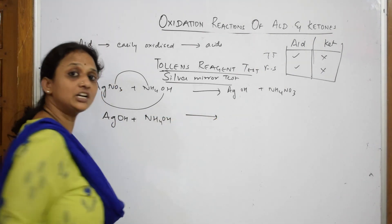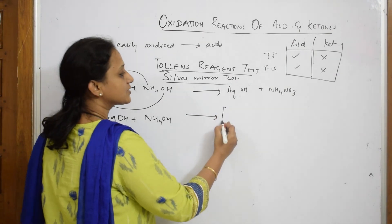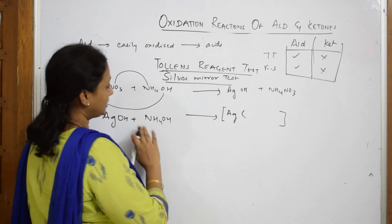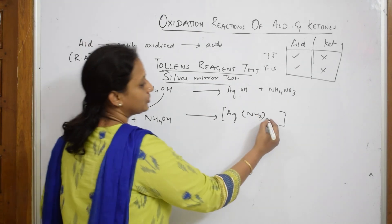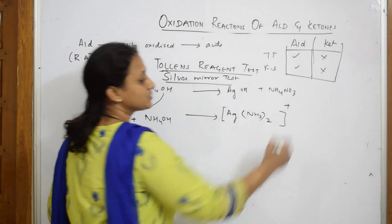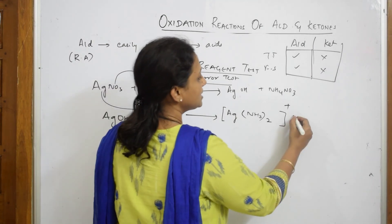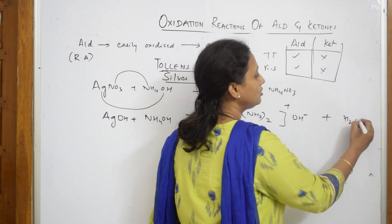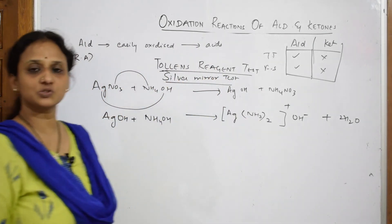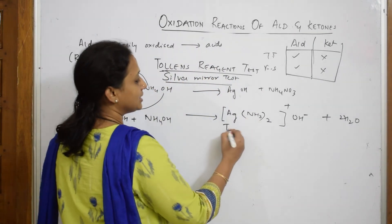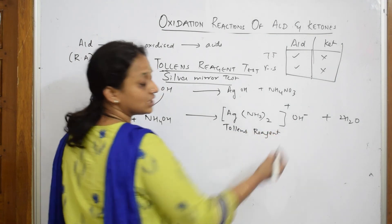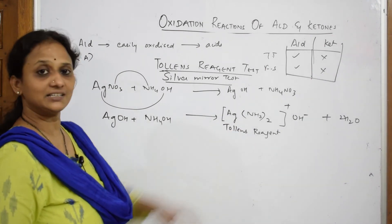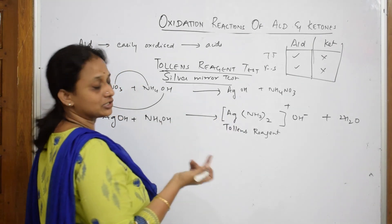The silver hydroxide and ammonium hydroxide form a coordinate covalent complex. Write a square bracket: the silver metal ion with the ligand NH₃ — you take two NH₃ ligands — forming the cation [Ag(NH₃)₂]⁺, with OH⁻ as the counter ion. When it dissociates, the leftover comes out as two moles of water. This is your Tollens' reagent, also called ammoniacal silver nitrate solution.